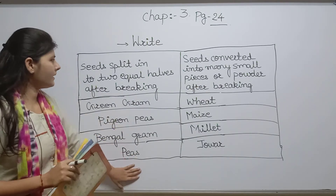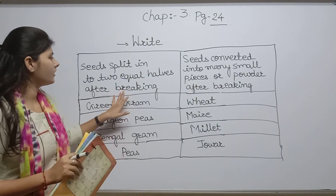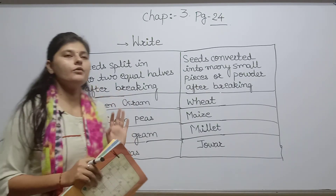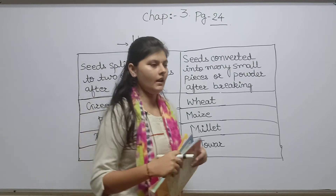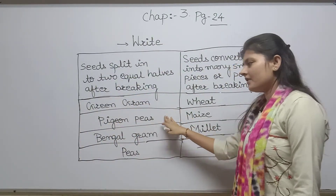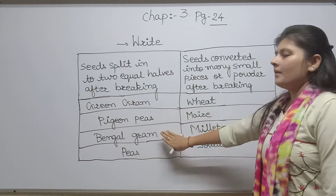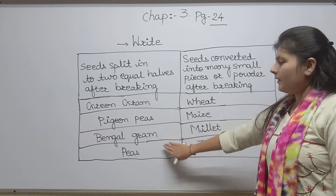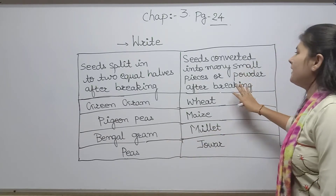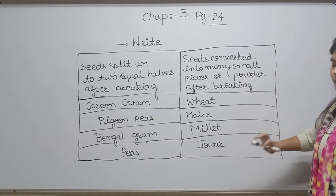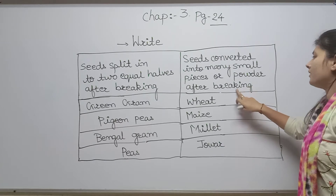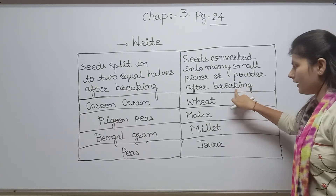So here are the examples. Some seeds split into two equal halves — that is green gram and pea, bengal gram and pea. And other seeds convert into small pieces or they convert into powder.